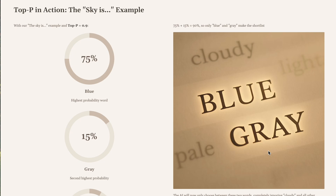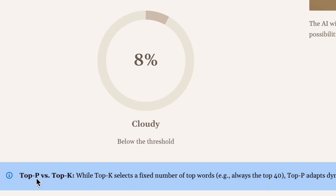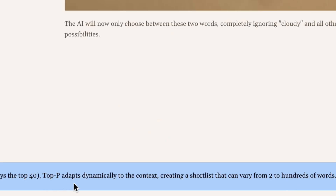This is more dynamic than a similar method called top K, which just picks a fixed number of top words. Top P adapts: for a simple question, its shortlist might be two words; for a creative prompt, it could be hundreds. It's the smarter way to sample.